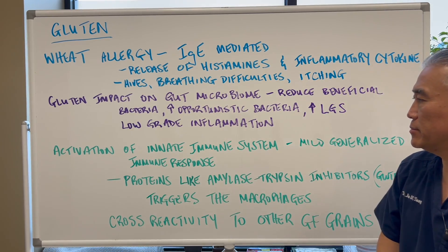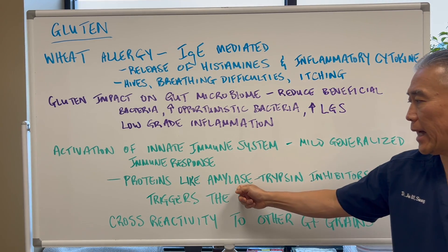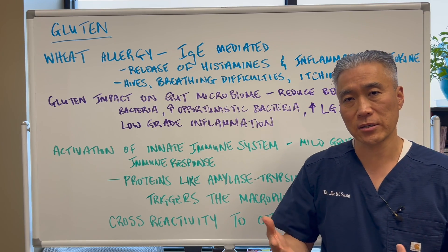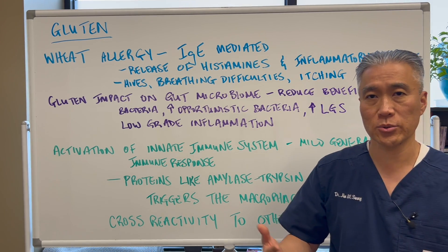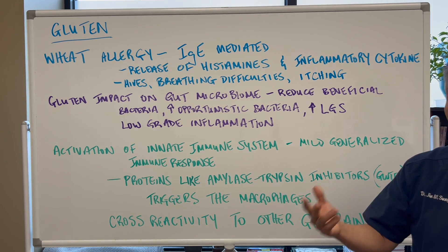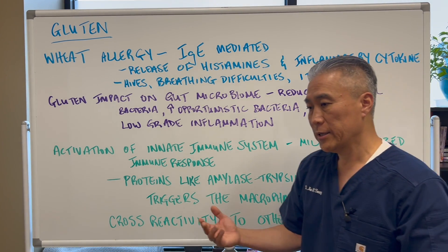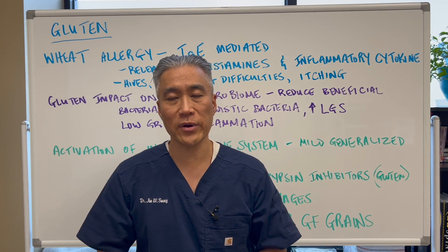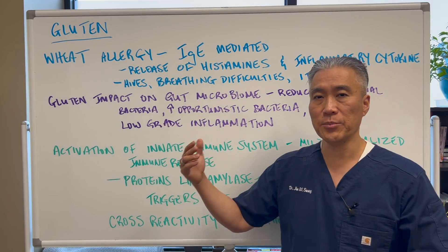Activation of the innate immune system — you're going to have a mild generalized immune response because of gluten exposure. Proteins like amylase trypsin inhibitors found in gluten inhibit enzymes in our system. Amylase is what breaks down carbohydrates, and trypsin is what breaks down protein into its amino acid sequences. If you have an immune response to amylase trypsin inhibitors from gluten, it's going to trigger macrophages. Here's the kicker: a lot of the wheat protein or gluten-containing protein looks very similar to other grains even though they're gluten-free, so you can be on a gluten-free diet and still have immune reactions.